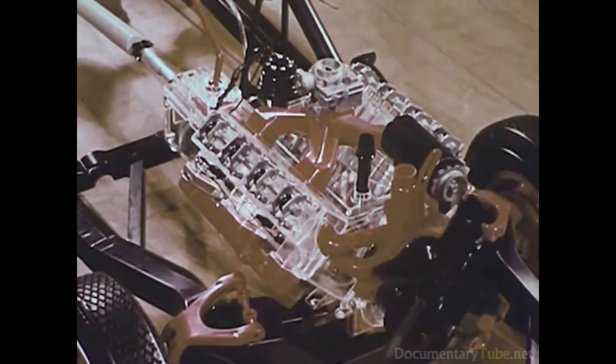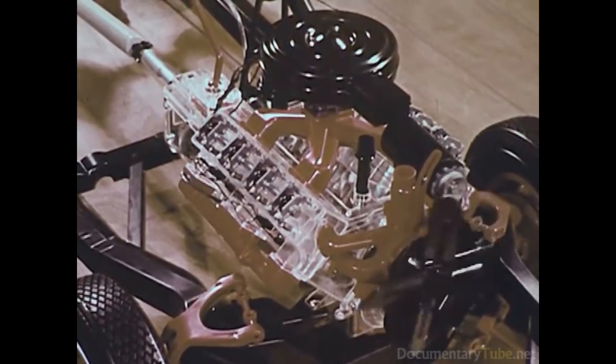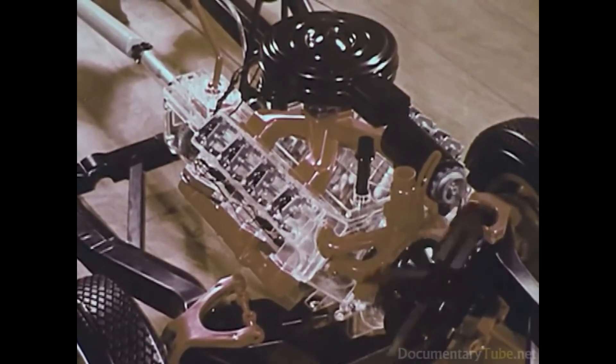Continuing the build-up, here are the carburetor and the manifold. And finally, the air cleaner atop the carburetor.